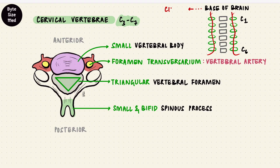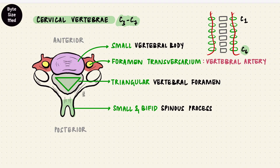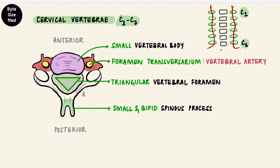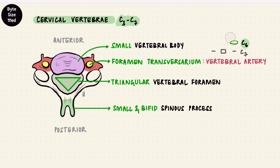Eventually this artery is going to form the circle of Willis. Since it's C6 upwards, that means C7 has a small or an absent foramen because there's no vertebral artery going through it. Along with the vertebral arteries are the vertebral veins and the sympathetic plexus.